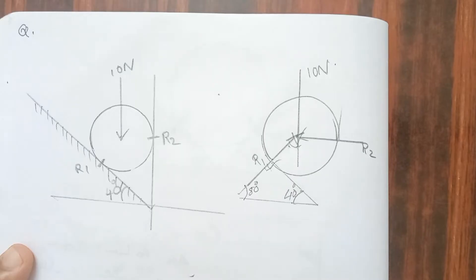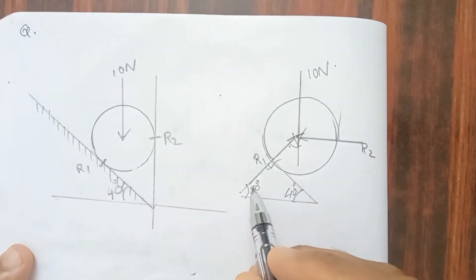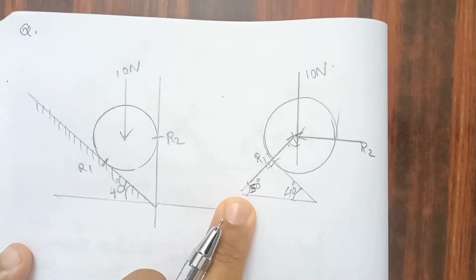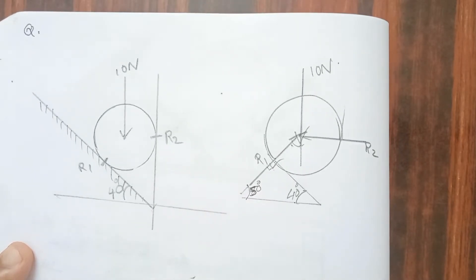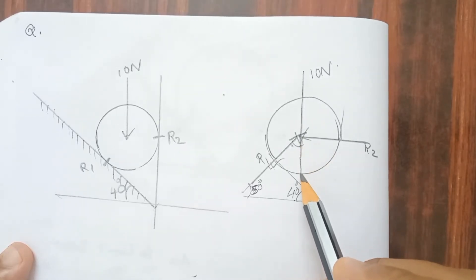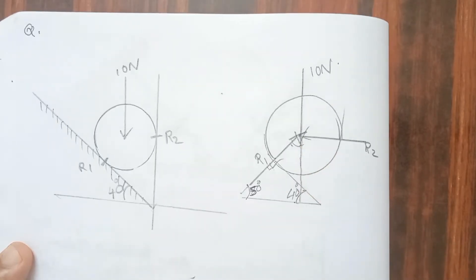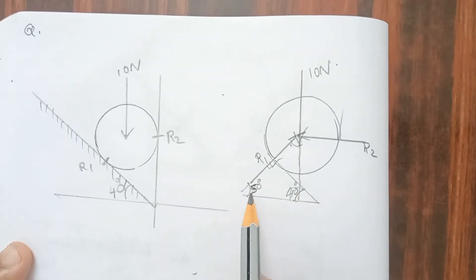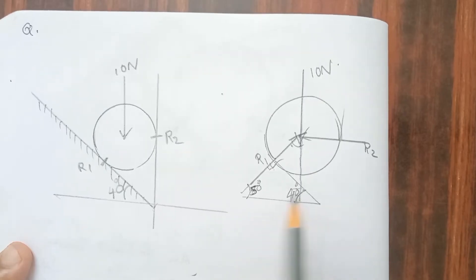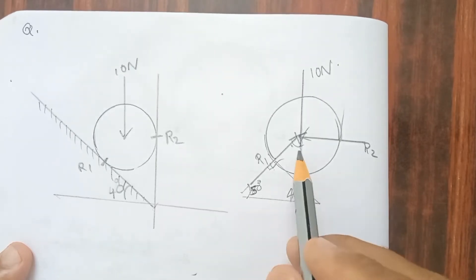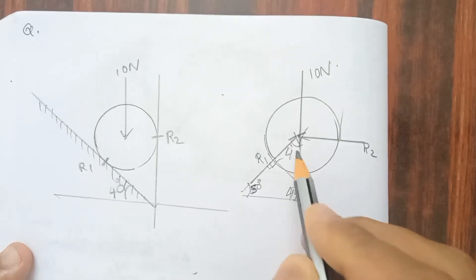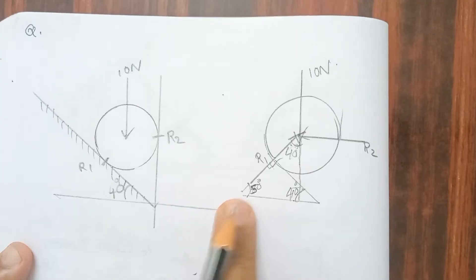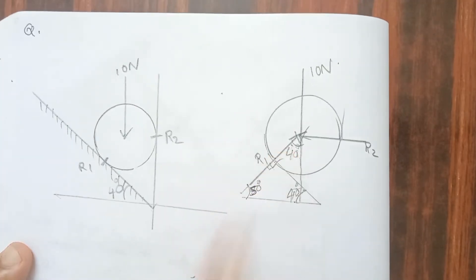Sum of angles of a triangle is equal to 180. This is 50 degrees. Now we are going to extend the line and extend the angle. Then this angle is 90 degrees. This is 50 degrees, then we will go to 90 degrees, this is 50 degrees, then it is 40 degrees.